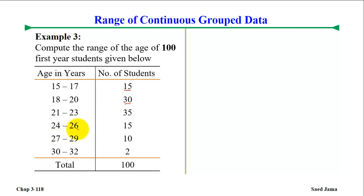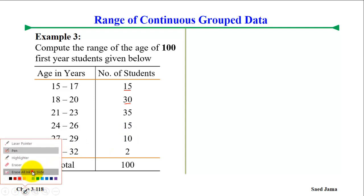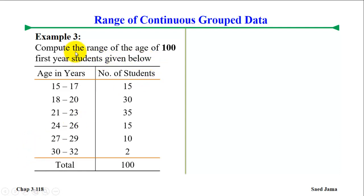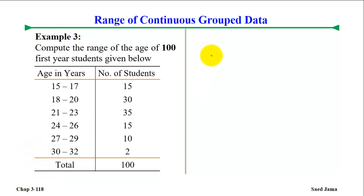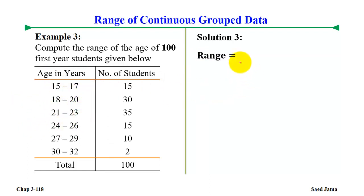We have to calculate using the formula for continuous grouped data. You can see that the formula is: upper class boundary of the last class minus the lower class boundary of the first class.